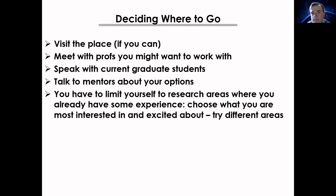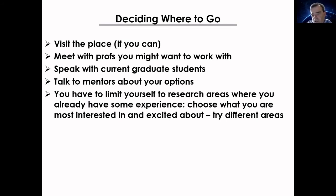Once you have received offers, visit the place if you can, meet with professors you might want to work with, and speak with current graduate students. Talk to your mentors about your options. You don't have to limit yourself to research areas where you already have experience — choose what you're most excited about. You can switch fields at the graduate level and try different areas early in your graduate school to see what you really like.